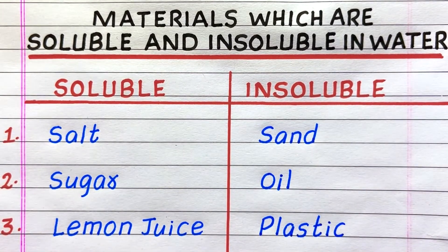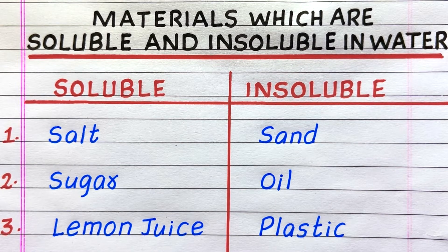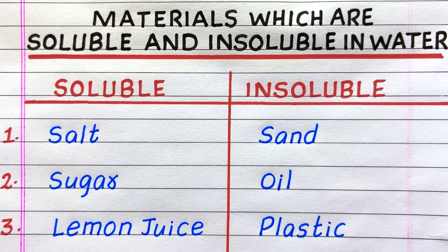The first material that is soluble in water is salt, second sugar, third lemon juice. The first material that is insoluble in water is sand, second oil, third plastic.